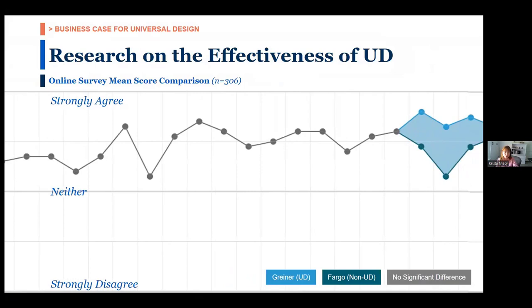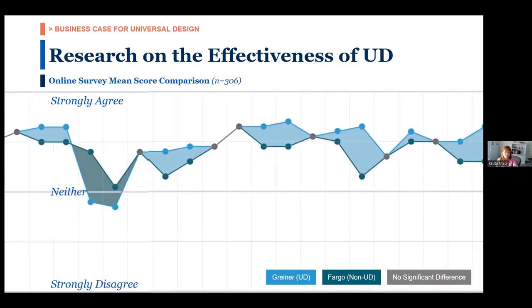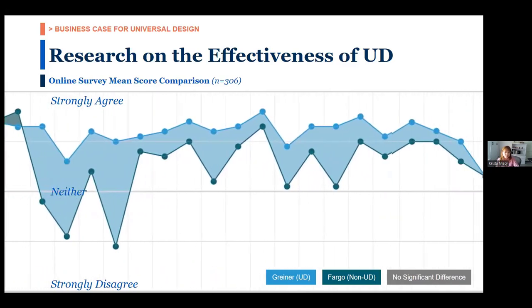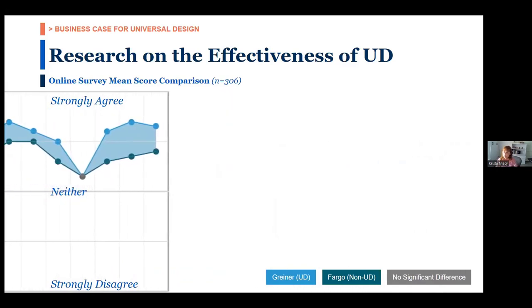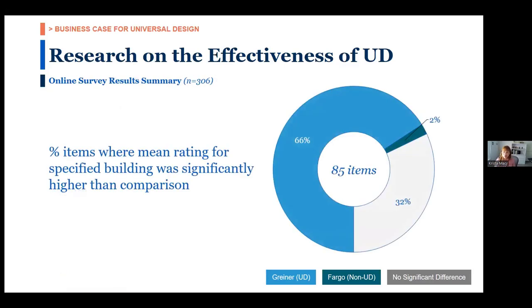We did a post-occupancy evaluation of a dormitory building we designed on the University of Buffalo campus. After renovation, we surveyed users specifically about UD features that were incorporated, asking whether their satisfaction increased, stayed the same, or decreased. You can see the difference between UD and non-UD buildings: UD is represented in blue, non-UD in green. The better-rated building is closer to the top of the screen — and that includes the building with more UD features. When asking about the interior, there was a dramatic increase in satisfaction. Of the people deeply familiar with the building, 66% favored the UD building, while the non-UD building had only 2% of questions rated better.